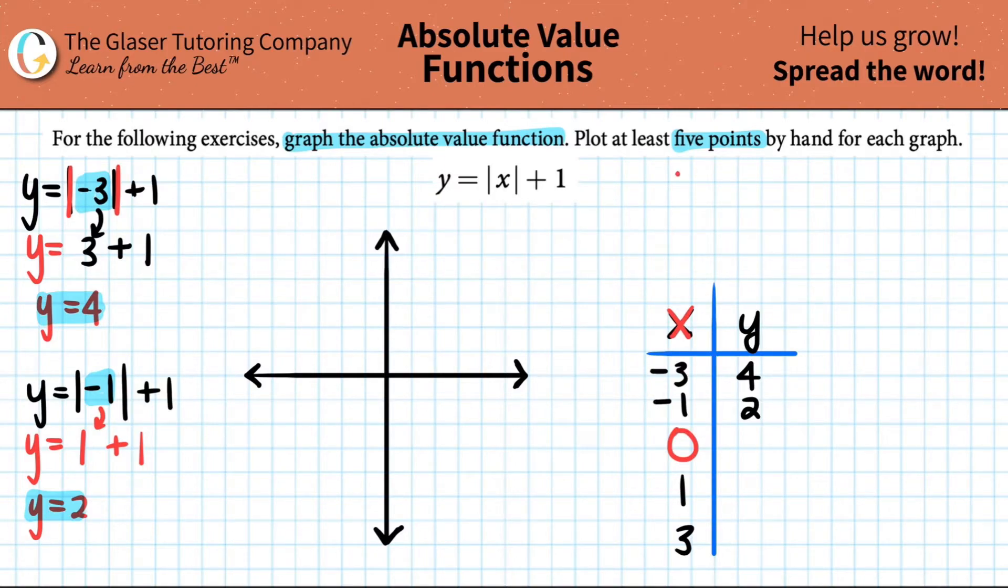Now let's do the next one. Y equals the absolute value of zero plus one. Now, fun fact, zero is not positive nor negative. So you have to keep it just the way that it is. The absolute value of zero is always zero. And then zero plus one, Y is equal to one. So that's our third point. Pretty easy, right? Just practice with math.